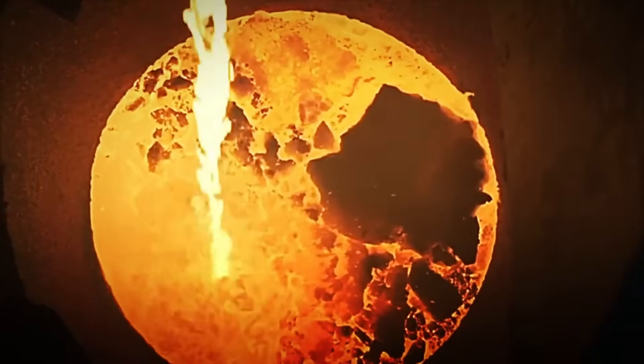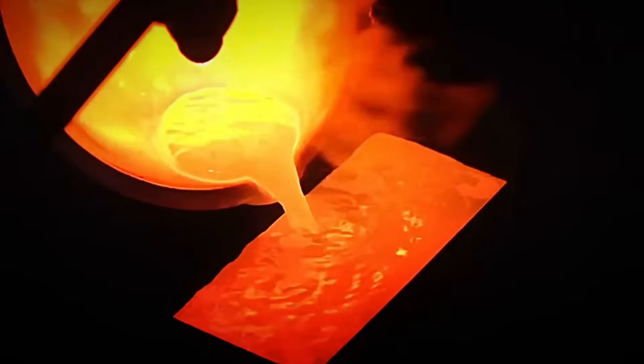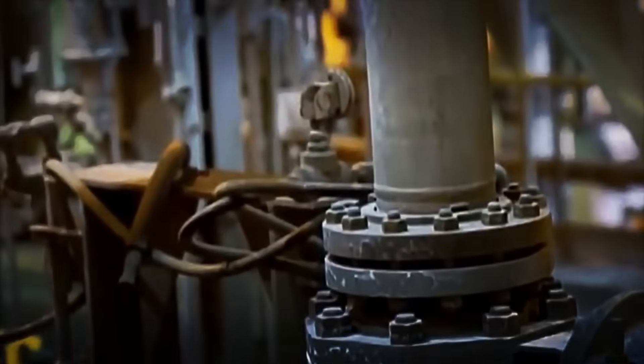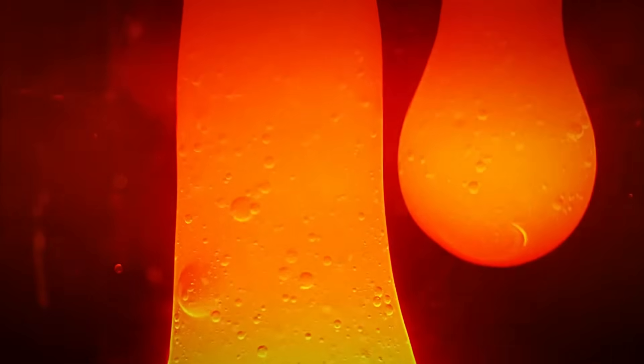But the refining doesn't end there. To achieve the highest purity, an electrolysis process is used, in which the molten gold is submerged in a chemical solution and an electric current is passed through it. This step eliminates any trace of remaining impurities, leaving the gold with an impressive purity, which can reach up to 99.99%.